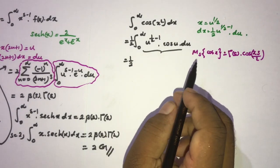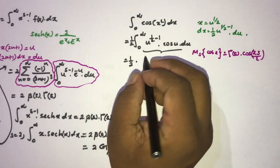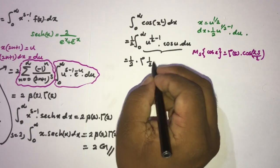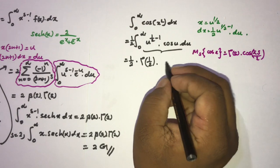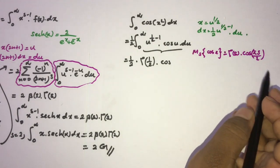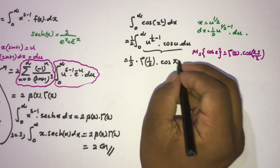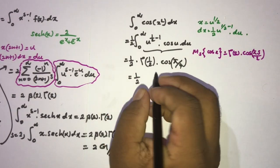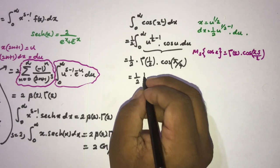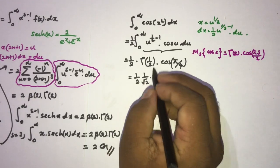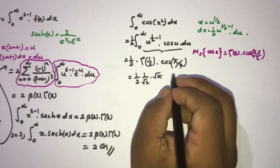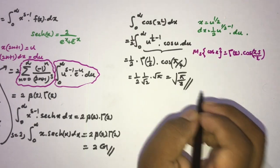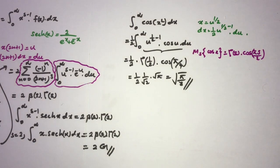So the result is (1/2) times Γ(1/2) times cos(π/4). We know cos(π/4) = 1/√2 and Γ(1/2) = √π, giving us (1/2) · √π · (1/√2) = √(π/8). This is the answer for the integral from 0 to infinity of cos(x²) dx.